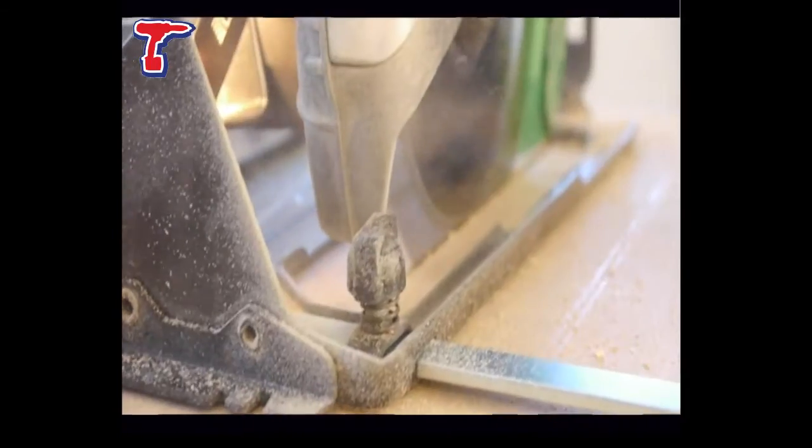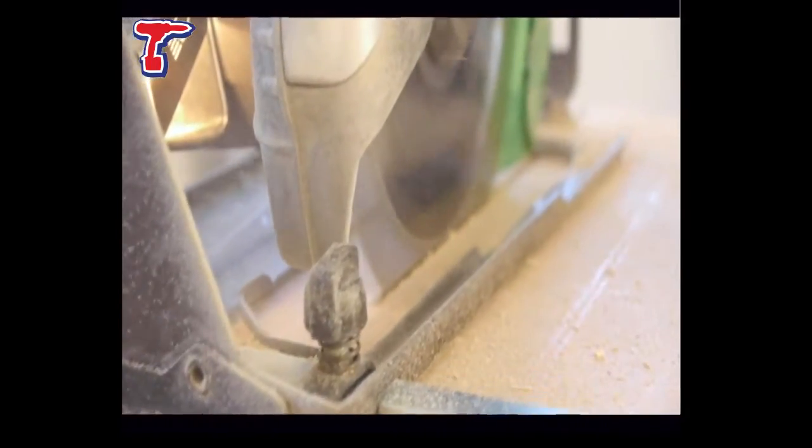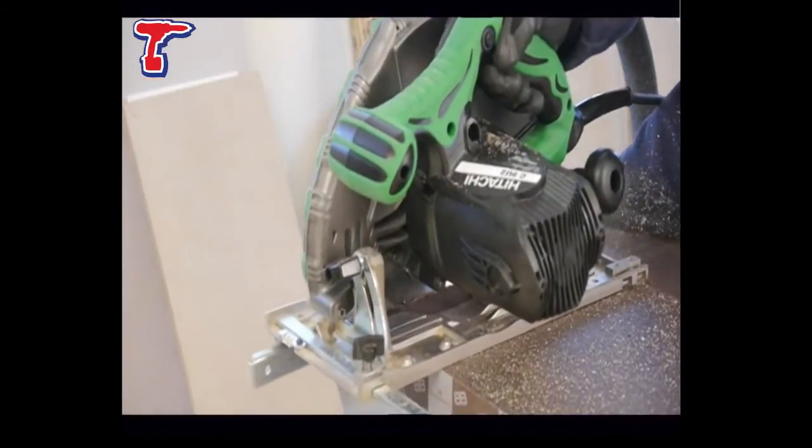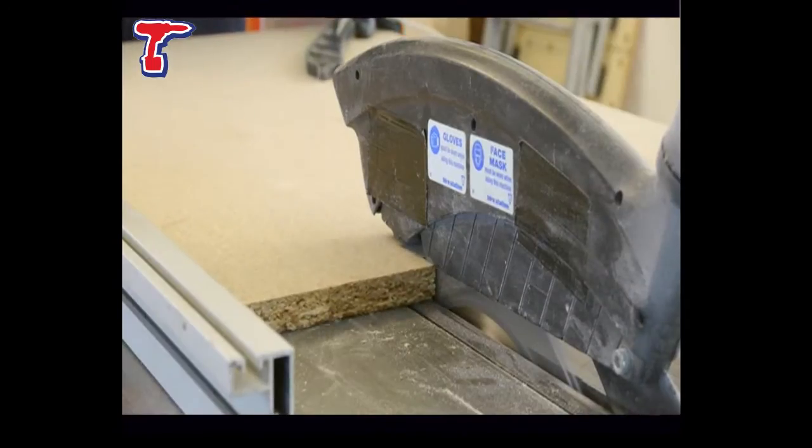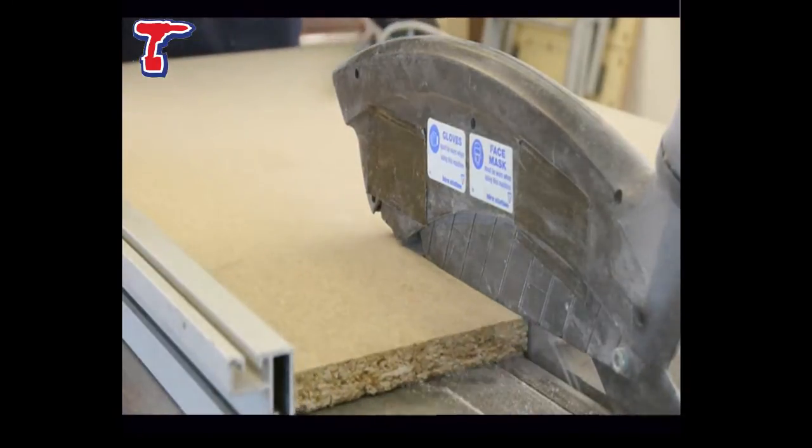FiberFast saw blades should be used with normal woodworking machines and are perfect for cordless trim saws, portable corded saws, miter saws, chop saws, table and side saws.